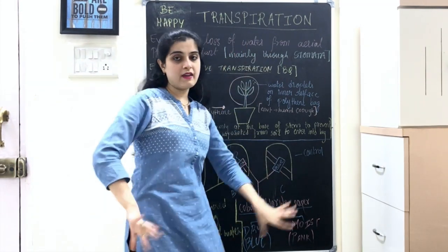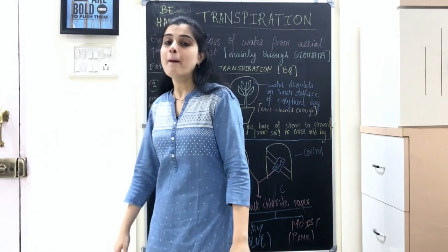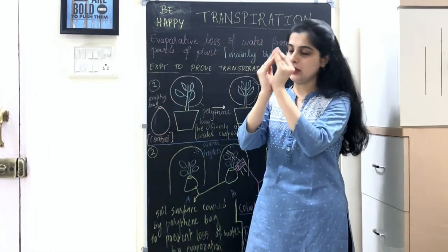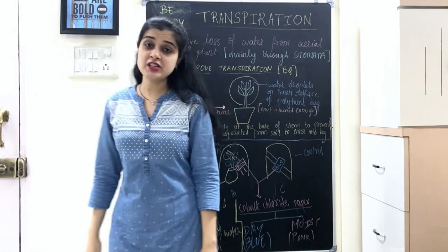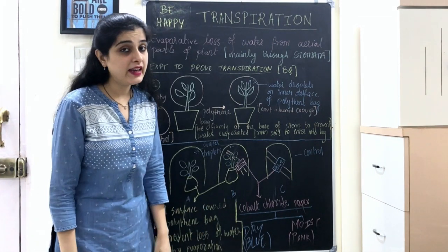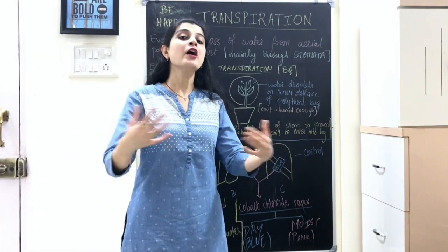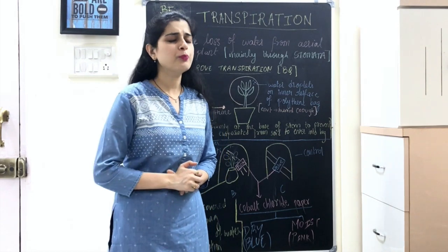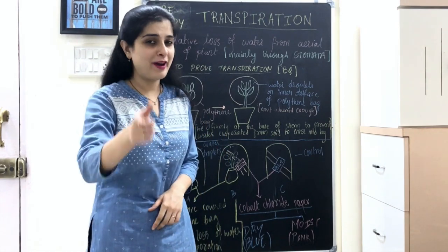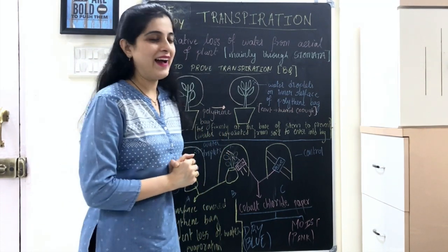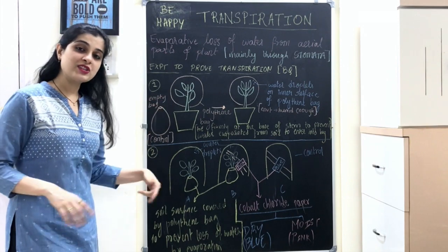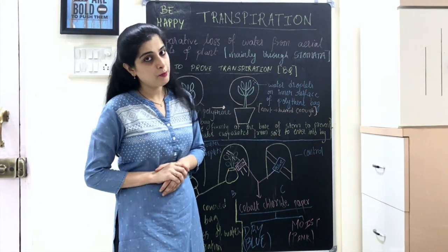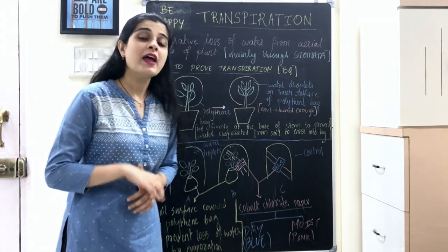Here is the definition: transpiration is the evaporative loss of water from the aerial parts of the plant, mainly through stomata. Now, anything that is not visible is hard to believe, so there has to be an experiment to prove that transpiration is taking place. Both the questions here are board questions — five marks each.